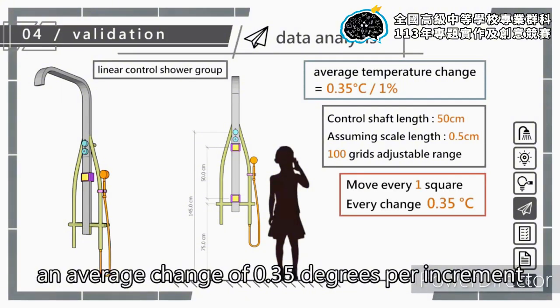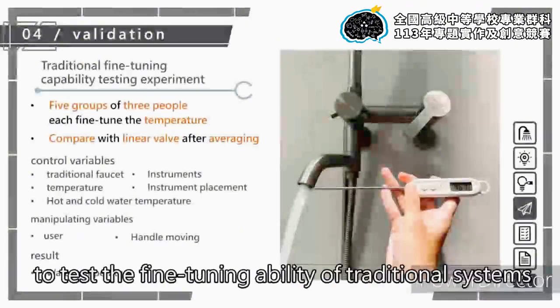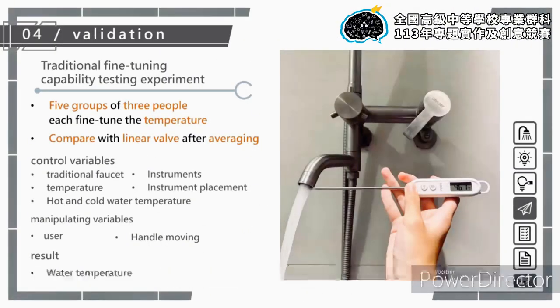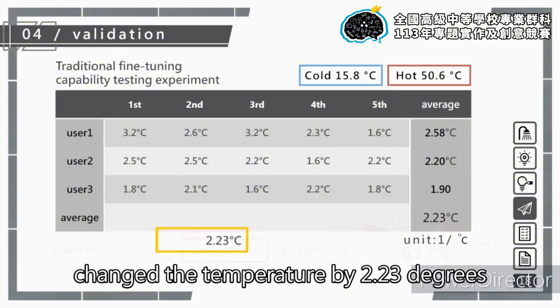We conducted an experiment to test the fine tuning ability of traditional systems. The results showed that on average, every fine adjustment changed the temperature by 2.23 degrees, which is 637 percent worse than our linear valve structure.